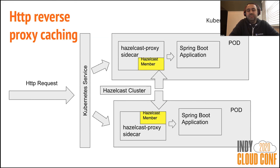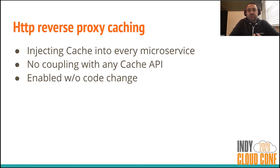This is not available as an off-the-shelf component — it's something you have to implement. One interesting development is with Envoy Proxy, a well-known service proxy. They recently created a caching abstraction and Hazelcast has implemented a cache filter plugin. So if you're an Envoy Proxy user, in the next releases you should be able to use Hazelcast in this architecture. The advantage is you inject caching into every microservice without changing any code and without any caching API inside your microservice.